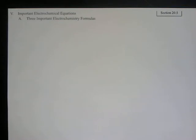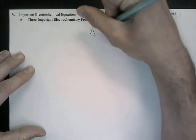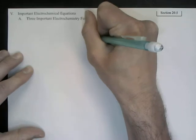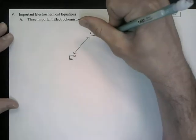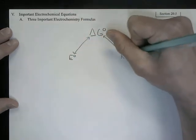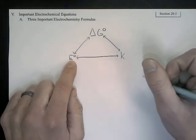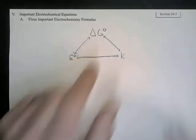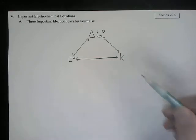We can really tie together multiple concepts discussed so far. These multiple concepts are often seen in a triangle where we have change in Gibbs free energy, which can be interrelated to standard cell potential, which can also be interrelated to K, our equilibrium constant. You may be wondering — we discuss standard cell potential with Electrochemistry, Gibbs free energy with thermochemistry, and equilibrium constant in our equilibrium unit.